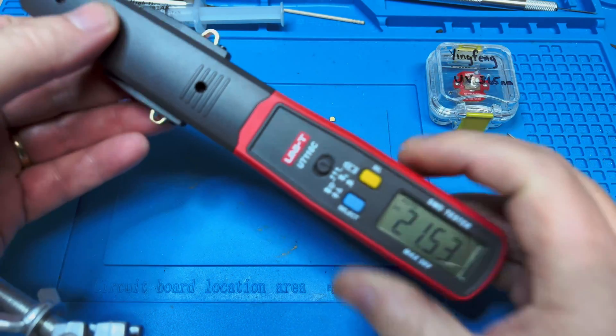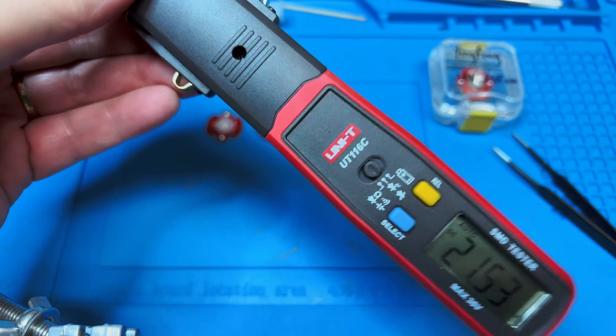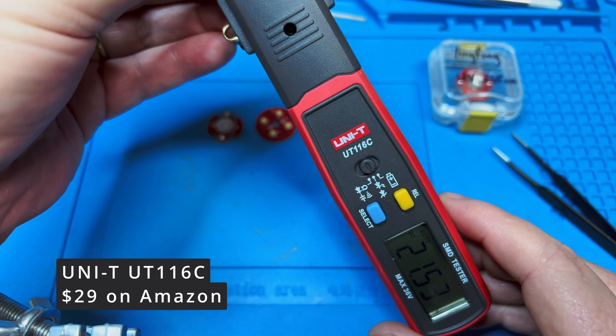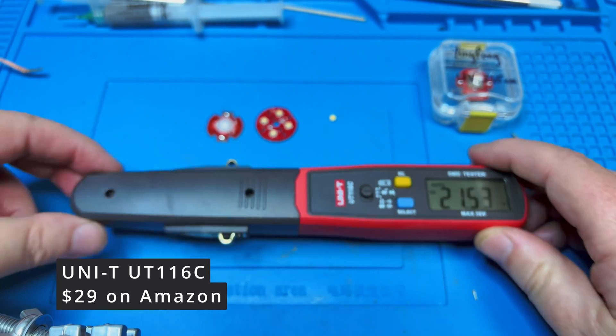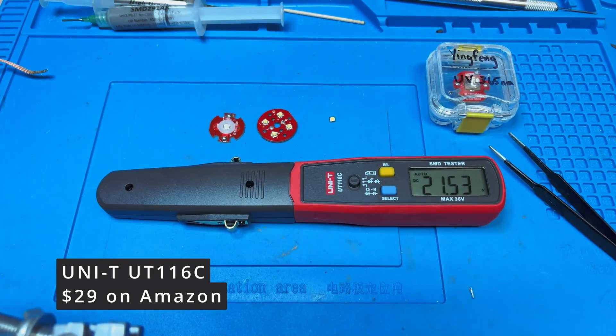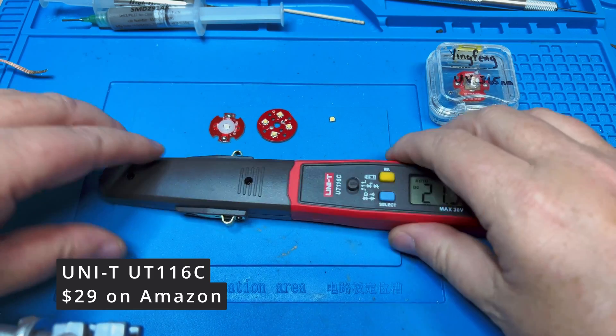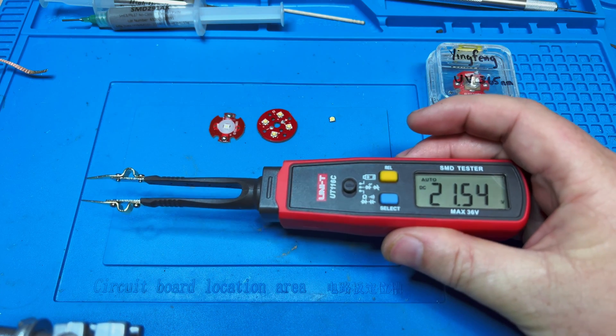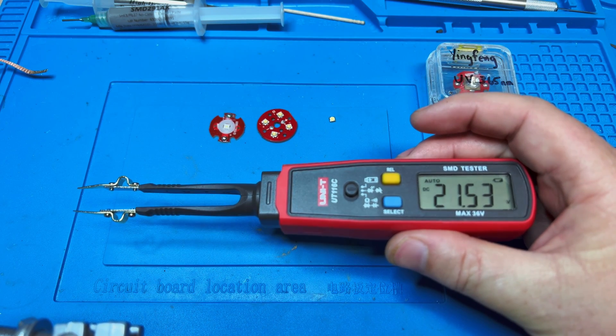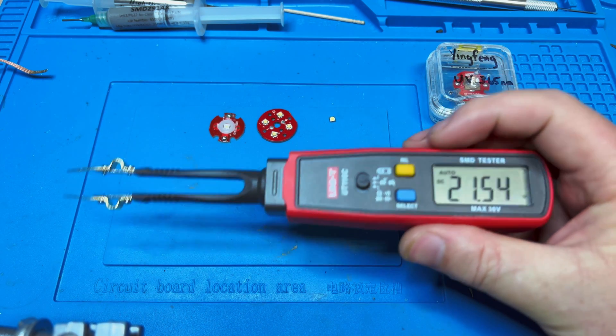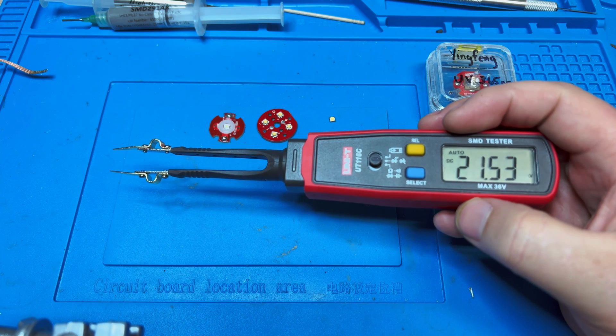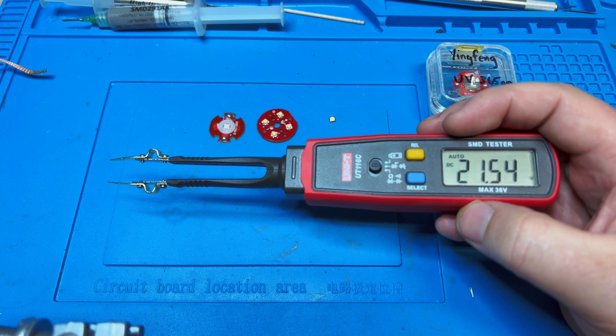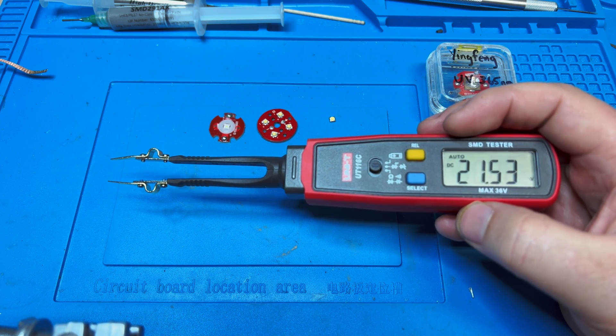So this tool right here, let me get a good focus on it—this is the UNI-T UT-116C. There's others like it, this isn't the only one that does this. First off, it's designed to not break a diode, not break an emitter. It puts out a high voltage at very low amperage, and if you get it backwards it's not going to light the emitter up at all and there's no damage. If you get it the right way, then it lights up.